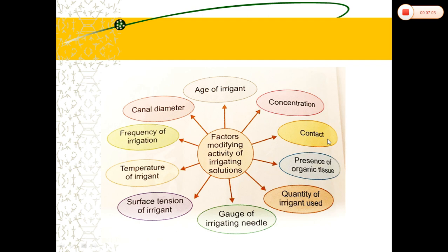The gauge of the irrigating needle is also important. A 27 or 28 gauge needle is preferred as it can go deeper into the canal — beyond the middle third — for better delivery and debridement action, reaching the apical third. You can use 27 or 28 gauge for that purpose.